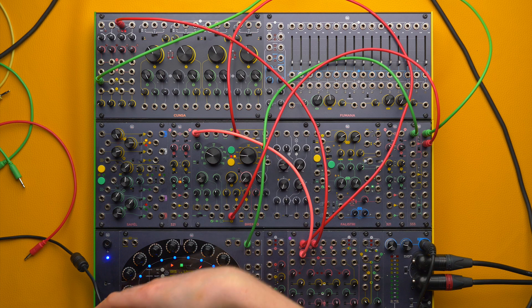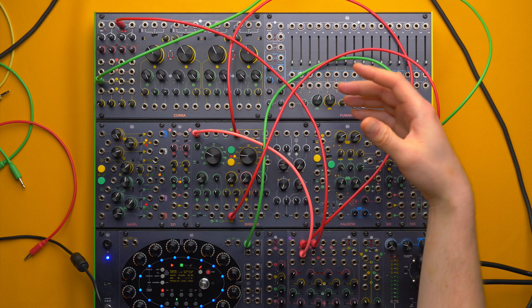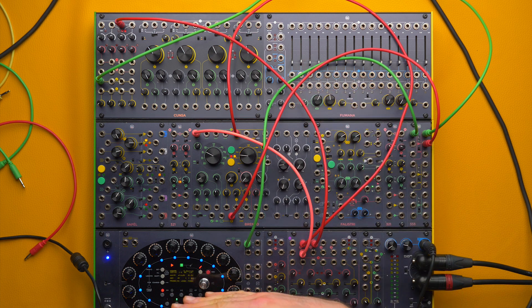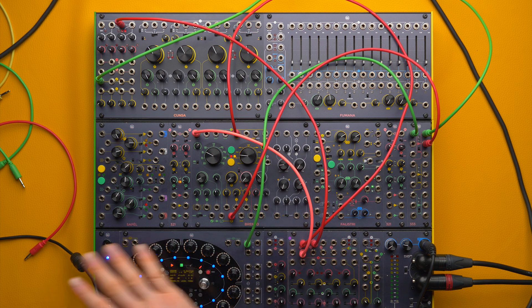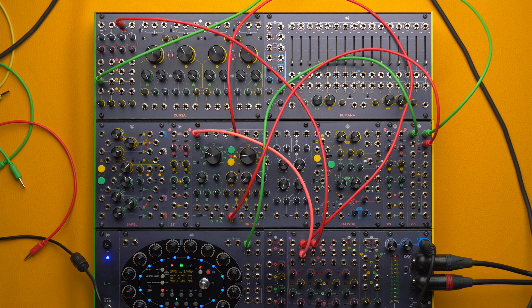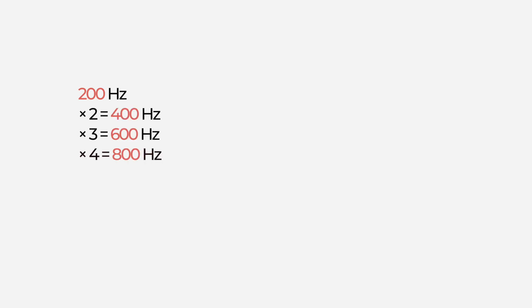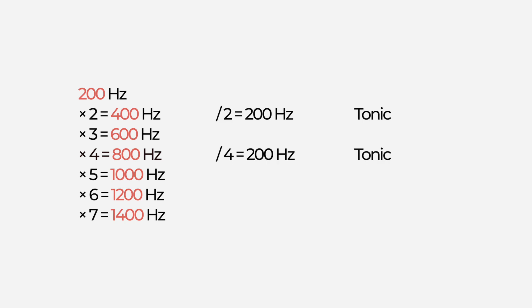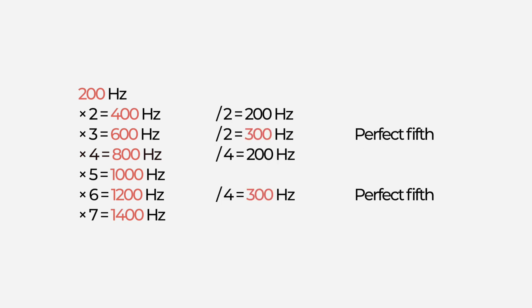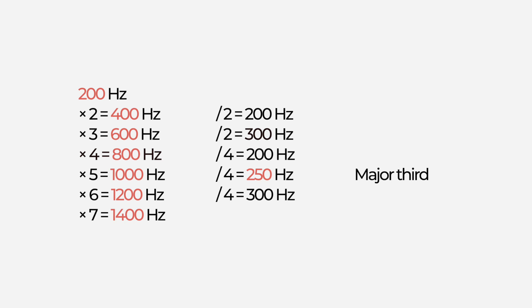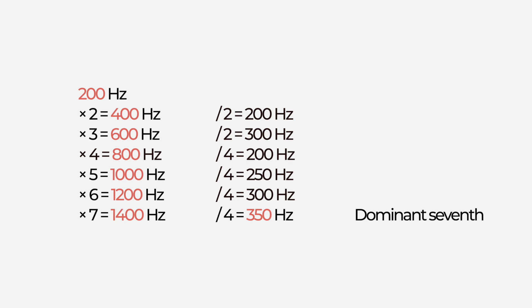Let's try to take the frequencies that make our harmonic overtones and squeeze them into a single octave — we will divide them until they fit on the same octave as the fundamental and see what happens. If we transpose the overtones to the same octave, the third harmonic and its multiples become the fifth, the fifth harmonic becomes the major third, and the seventh harmonic becomes the dominant seventh. So if we put them all to the same octave, we no longer perceive them as part of a single timbre but as part of a chord — the dominant seventh chord, which is the key and foundation of western tonal harmony.